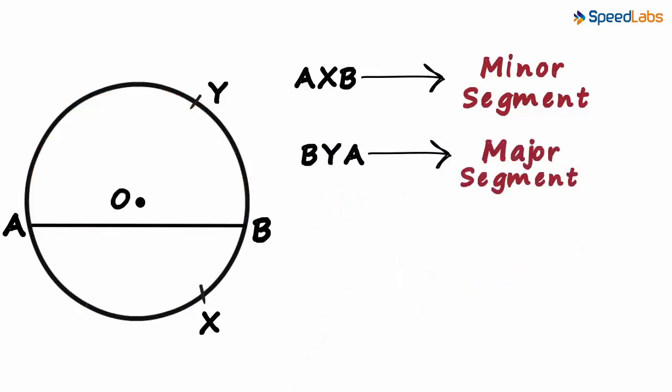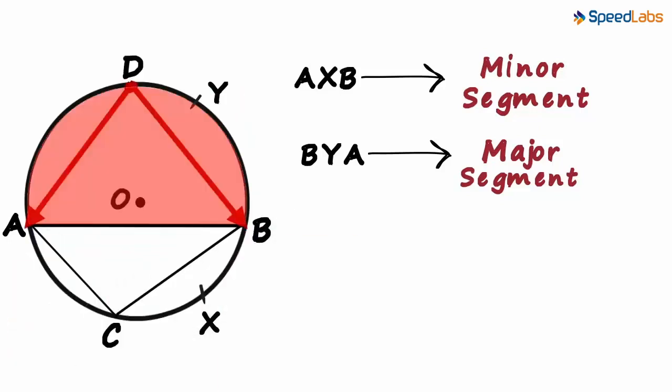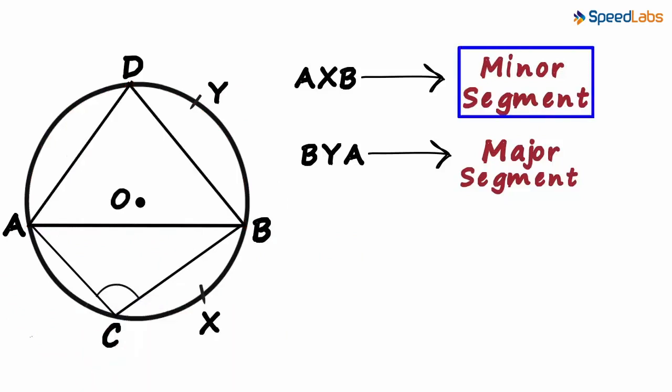Now let's draw the angles for each of the segments. Let angle ACB be the angle of segment AXB and let angle ADB be the angle of segment BYA. This is the angle formed in the minor segment and this is the angle formed in the major segment.